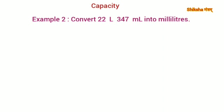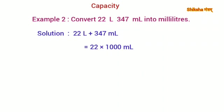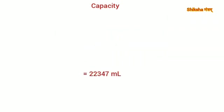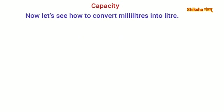Let's take one more example: convert 22 liters 347 milliliters into milliliters. First, convert 22 liters into milliliters by multiplying by 1,000: 22 × 1,000 = 22,000 milliliters. Then add 347 milliliters to get the answer: 22,347 milliliters.